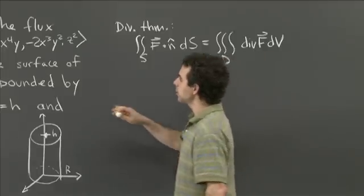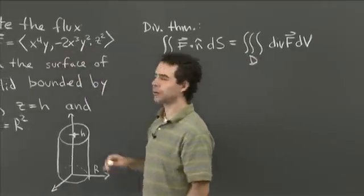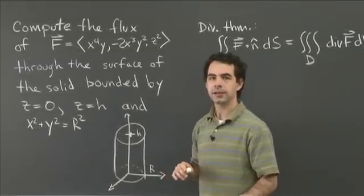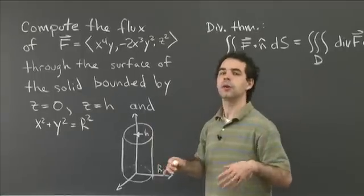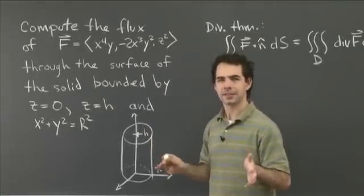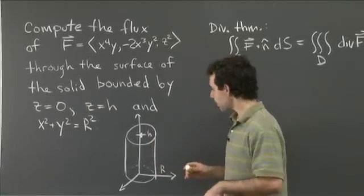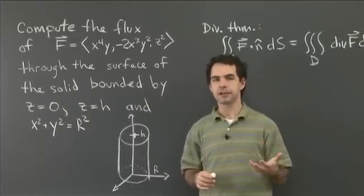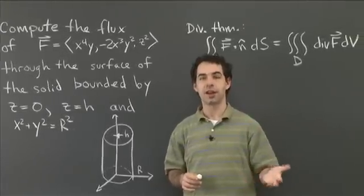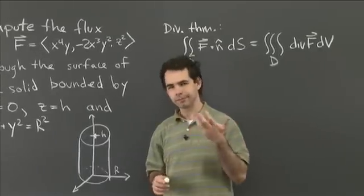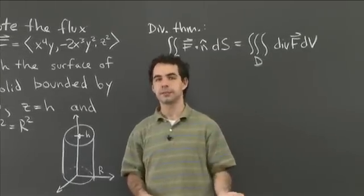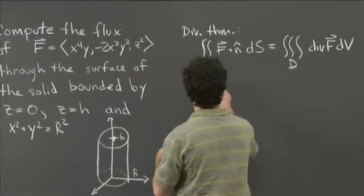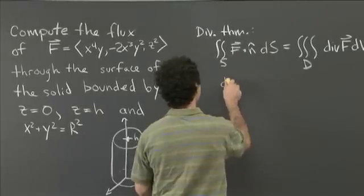If we look at this field, all of its components are polynomials. To compute its divergence, we take derivatives of each component, which lowers their degrees, and then we add them. So this process — using the divergence theorem — is going to make our lives easier. It's going to turn this nasty surface integral into an easy-to-compute triple integral. So let's compute div F first, so we know what the integrand is.